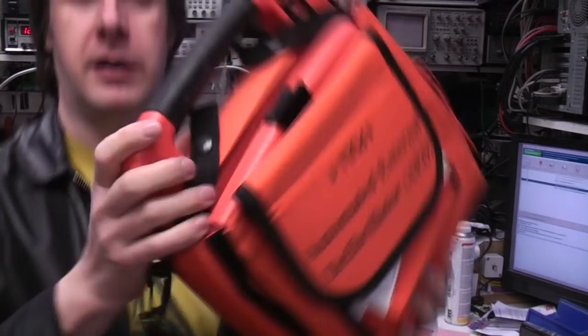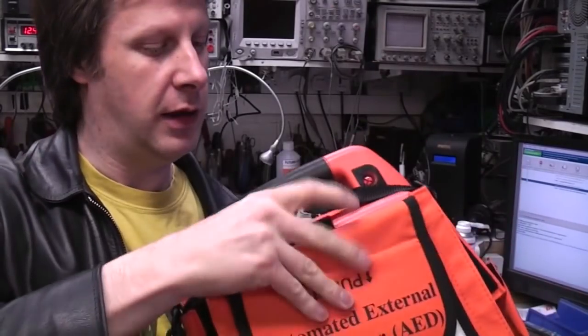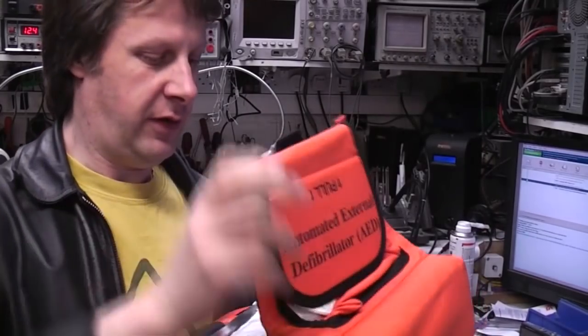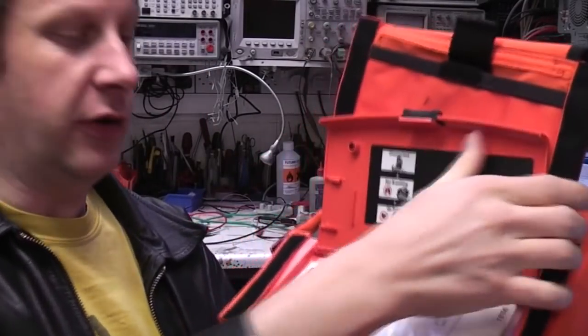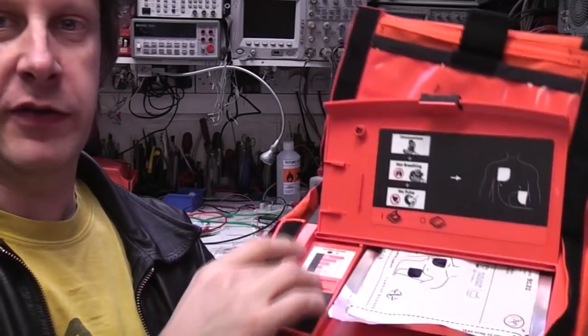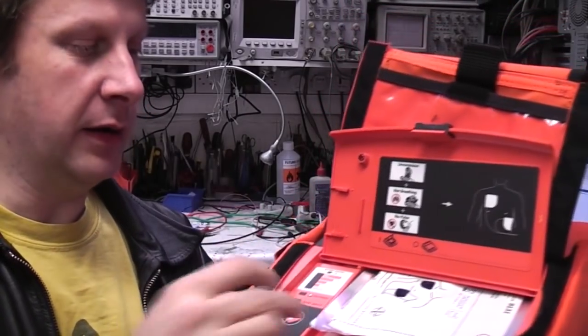It comes in a nice rugged case with a nice carrying handle. As you expect, very simple controls and you open the lid and that's what turns it on. You've got a few simple indicators telling what the battery life is and just a go button.